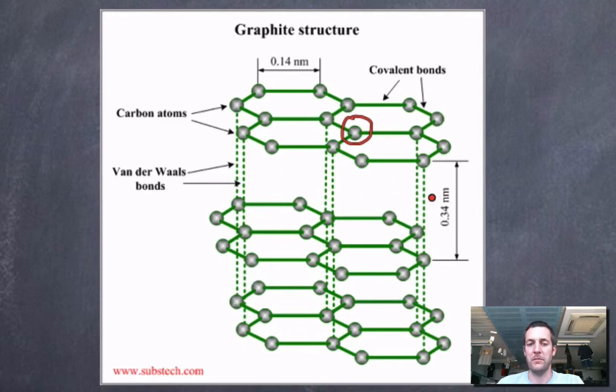There's very strong covalent bonds within the layers but very weak forces between them. Graphite will have a very high melting point because to separate everything I've got to break very strong bonds. To separate one layer from another, when I'm drawing with a pencil on paper and the top layer of carbon is rubbing off, it's very easy to do - it's quite a slippery substance.